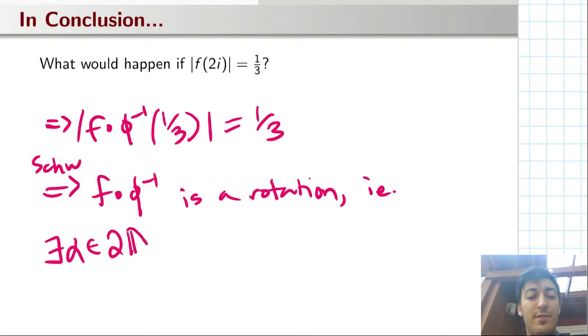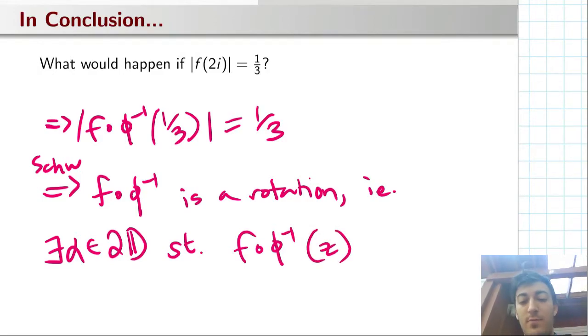...this function, which we applied Schwarz's lemma to, is really just this rotation. But that means that f itself, well, we can say something about that, because f ∘ φ^(-1) ∘ φ—these maps are conformal, we can do that—this is just f.